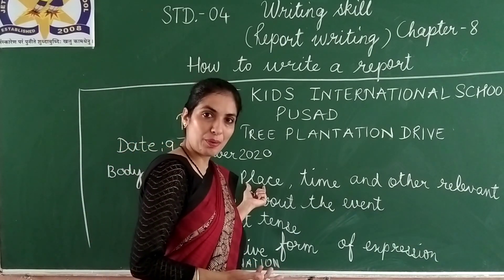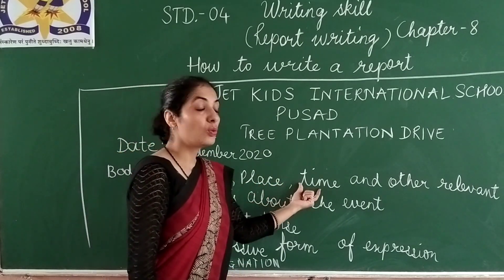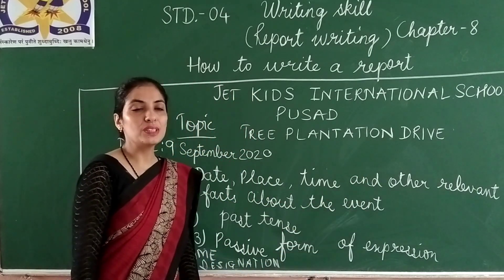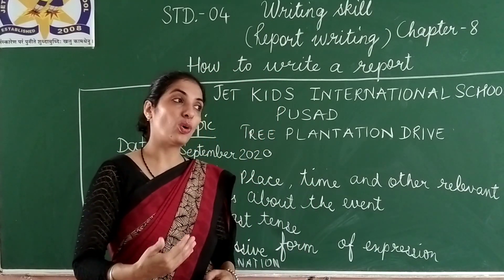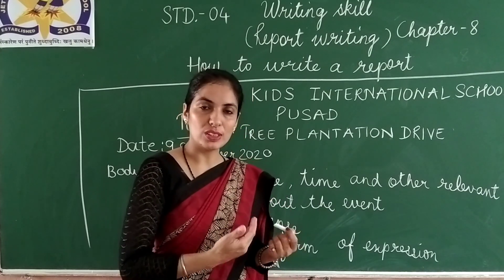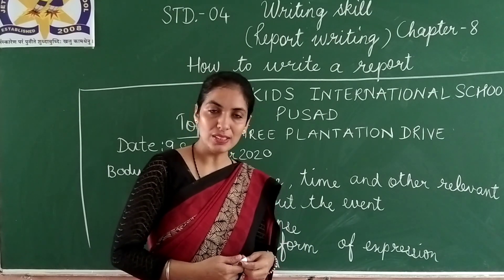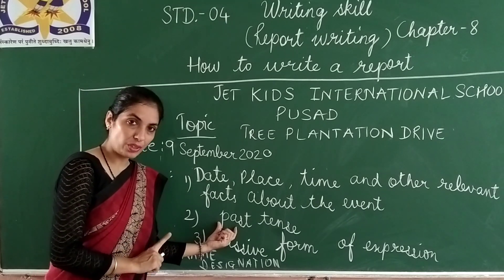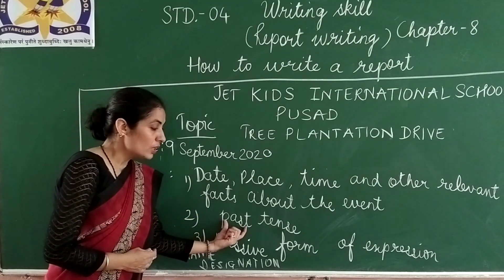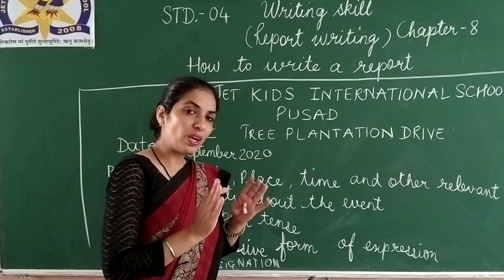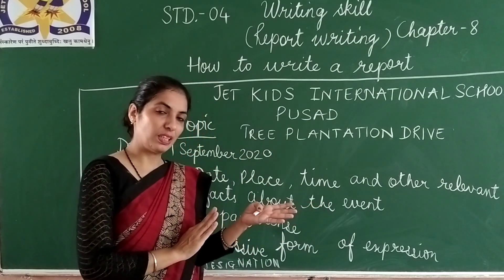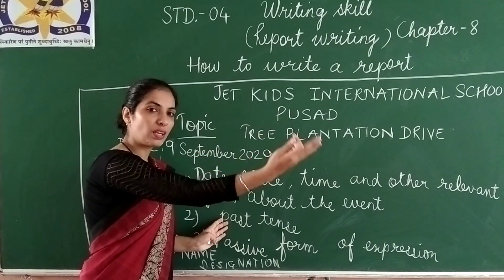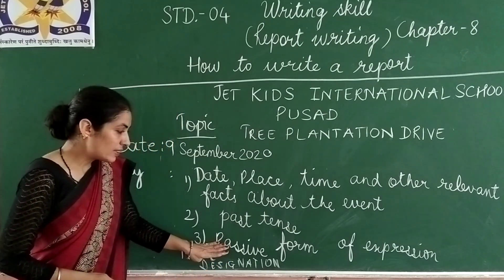Then comes the body of the report: the date when the event took place, the place where it took place — as stated, it took place in the neighborhood — and then the time and other relevant information or facts about the event. Always remember that the facts or information describing the event should be in the past tense form, because events that are already over are mentioned here. So it should be in past tense — for example, 'it was organized by' — using a passive form of expression.